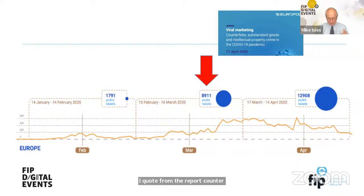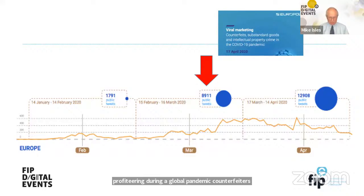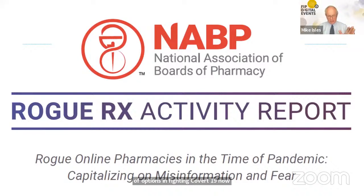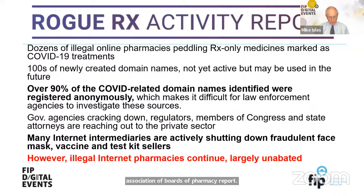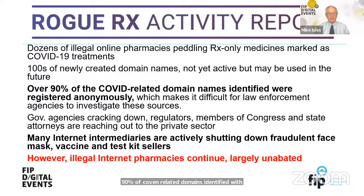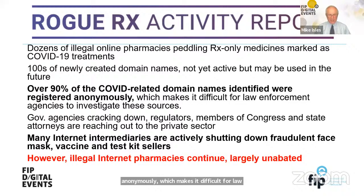A Europol report quotes: 'Counterfeiting of pharmaceutical products has been one of the most insidious forms of profiteering during a global pandemic. Counterfeiters have seized the opportunity to exploit the demand for drugs offering potential as treatment options in fighting COVID-19.' A National Association of Boards of Pharmacy report notes that over 90% of COVID-related domains identified were registered anonymously, making it difficult for law enforcement to investigate these sources.